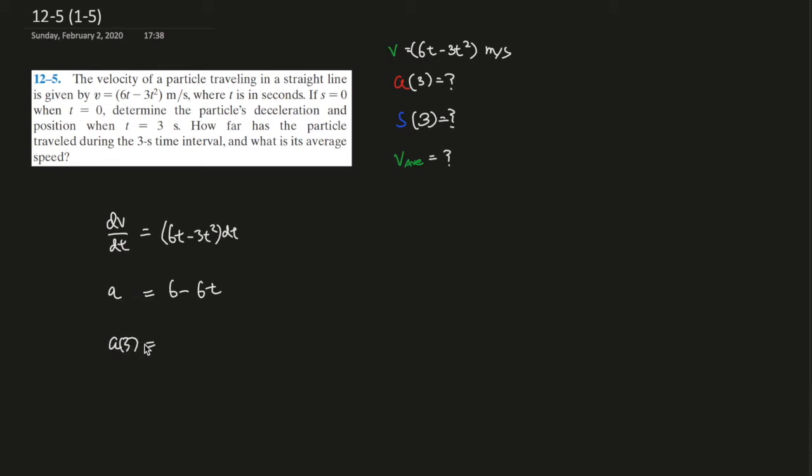Put three seconds in there, so this should give you 6 minus 18, so it gives you negative 12 meters per second squared, which proves what is being said in the question, decelerating, right? It's negative 12 meters per second squared, so this car is slowing down.